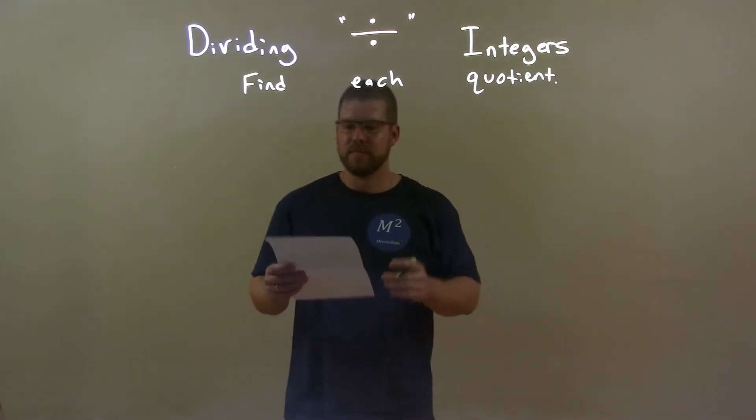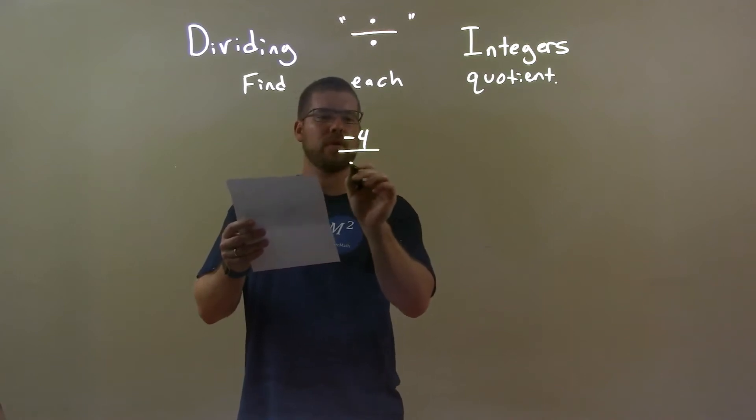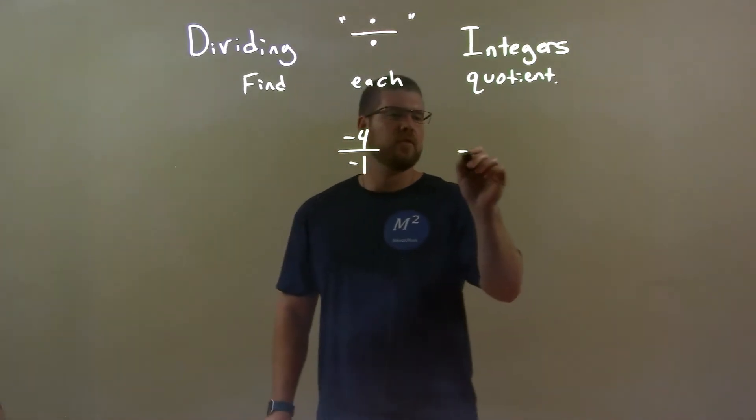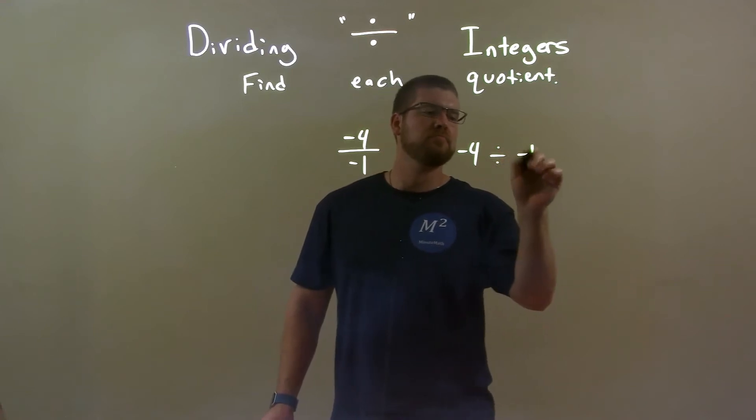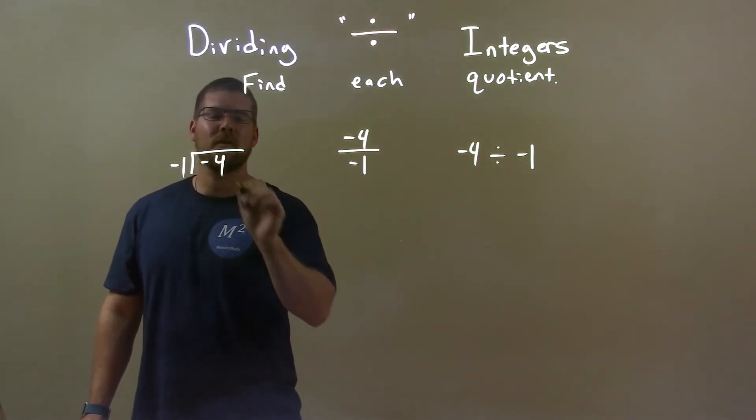So if I was given these integers: negative 4 over negative 1. Well, we can write that also as negative 4 divided by negative 1, or negative 1 goes into negative 4.